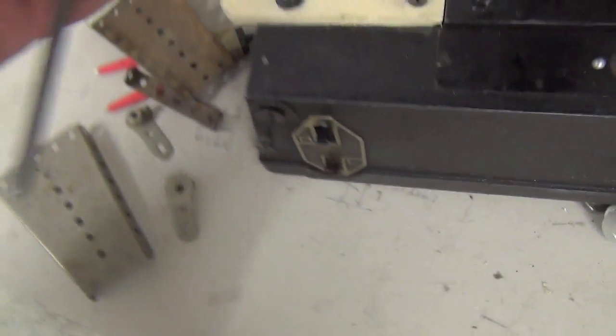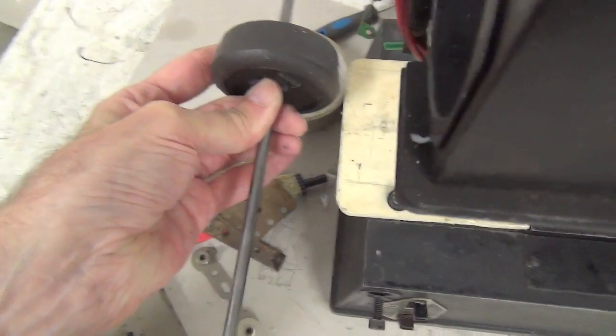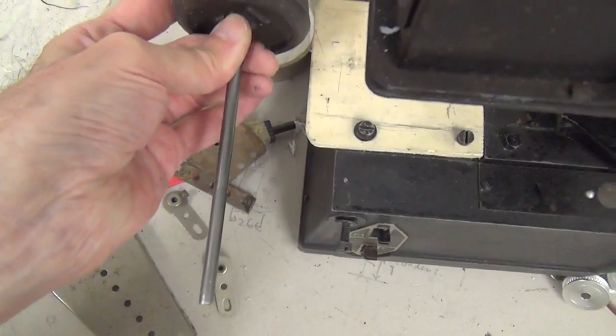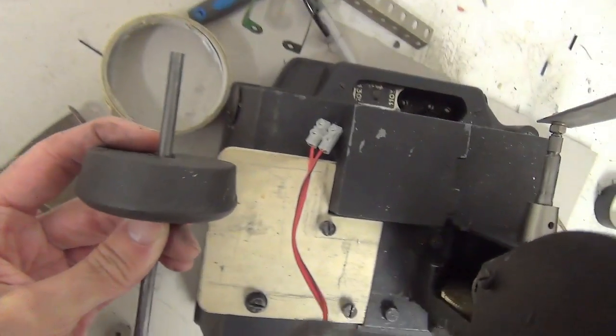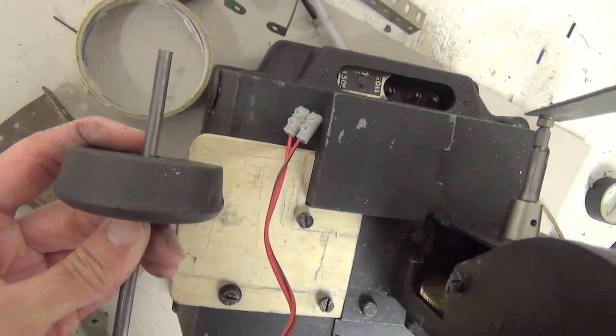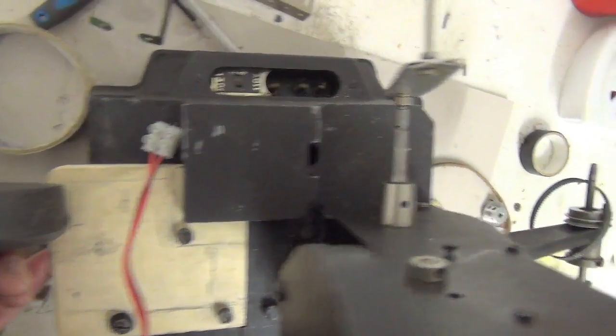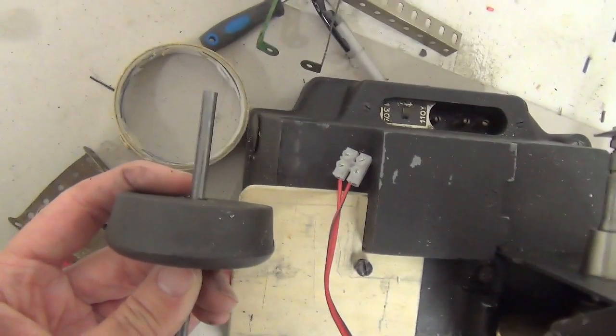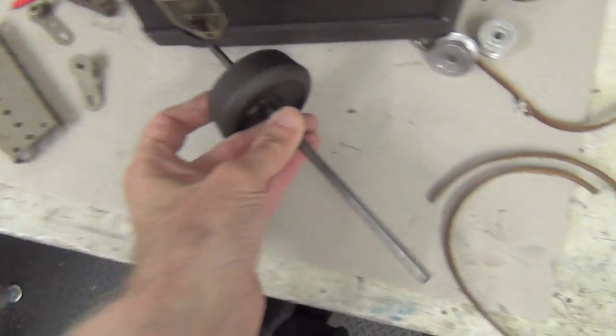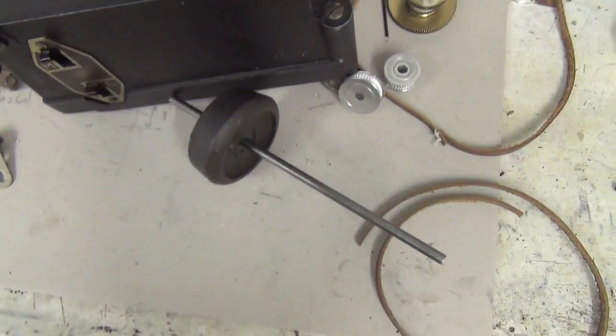So that will go somewhere around there and then a handle this end to turn, and a tooth belt from there to there. I think we should be in business in terms of hand cranking.